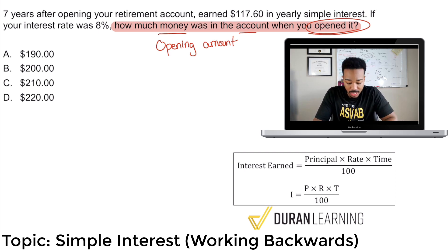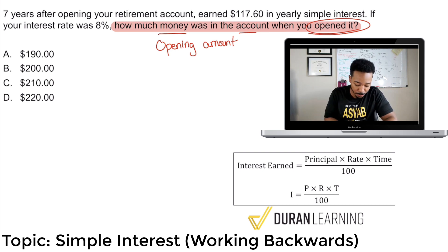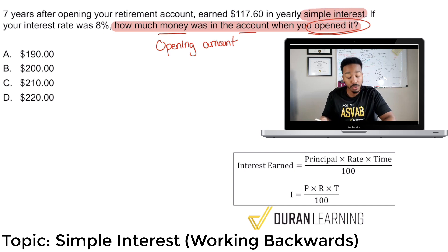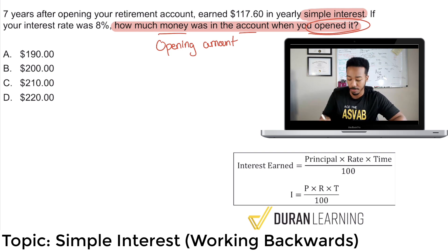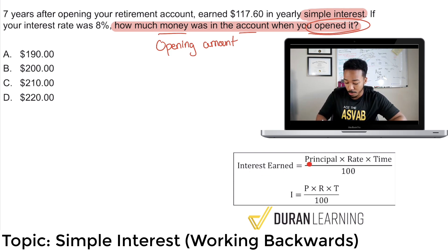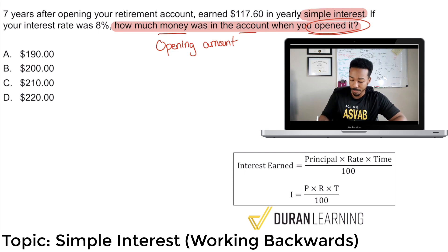When we read the information, we'll quickly see that this is a problem about simple interest. Because when you read through: seven years after opening your retirement account, you earned this much money in yearly simple interest — that gives it away. When you're talking about the opening amount, the initial amount, the starting amount, that is called your principal. And if you know your formula, interest earned is equal to your principal multiplied by your rate, multiplied by your time, divided by 100. The rate here is a percent, and I'm going to highlight everything accordingly.